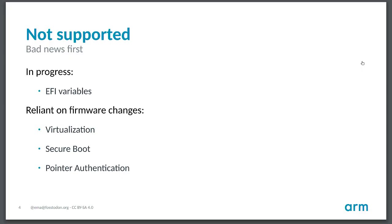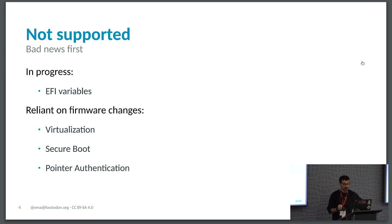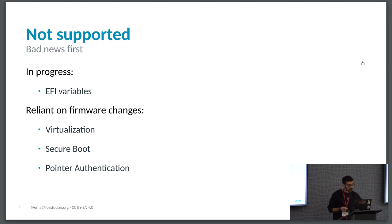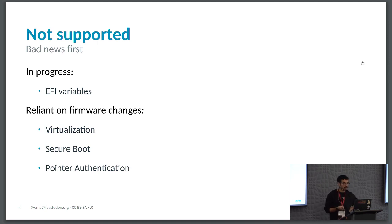Current status—I'm going to start with the bad news. There are a few things that don't work. One thing that didn't work till yesterday was sound, but as of yesterday, sound works. EFI variables are not currently supported; there are two kernel modules needed, and they are in the Linux Next branch but not available in any released Debian kernel yet. Once those land in a production kernel, we'll be able to have EFI variables, which will allow installing Debian without some workarounds.